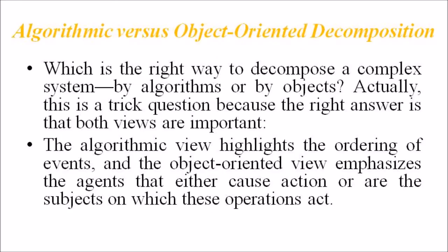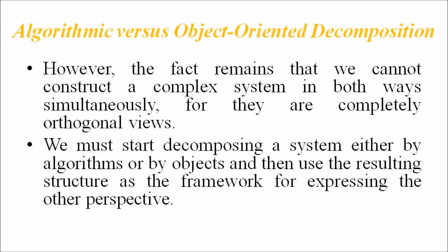When comparing algorithmic and object-oriented decomposition, the question arises: which is the right way to decompose a complex system — by algorithm or by object? This is a tricky question because the right answer is that both views are important. The algorithmic view highlights the ordering of events, and the object-oriented view emphasizes the agents that either cause actions or are the subject on which these operations act. However, the fact remains that we cannot construct a complex system in both ways simultaneously. We must start decomposing a system either by algorithms or by objects, and then use the resulting structure as the framework for expressing the other perspective.